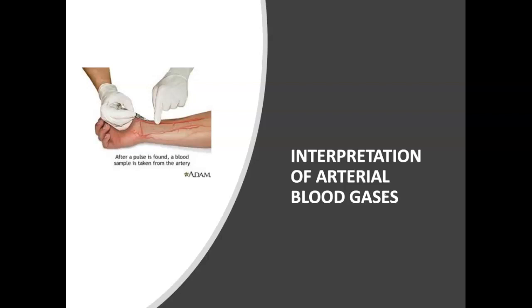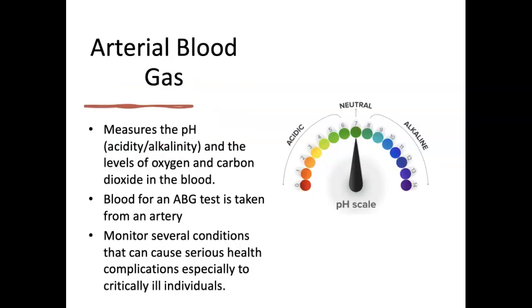Welcome to week four and our last part of our lecture on interpretation of arterial blood gases. I'm sure you've learned this before, so this is just going to be a high-level overview. An ABG, or arterial blood gas, is a blood test that measures the pH — the acidity or alkalinity — and the levels of oxygen and carbon dioxide in the blood. Blood for an ABG is taken from an artery, whereas most other blood tests are done on a sample taken from a vein. The test is done to monitor several conditions that can cause serious health complications, especially in critically ill individuals.